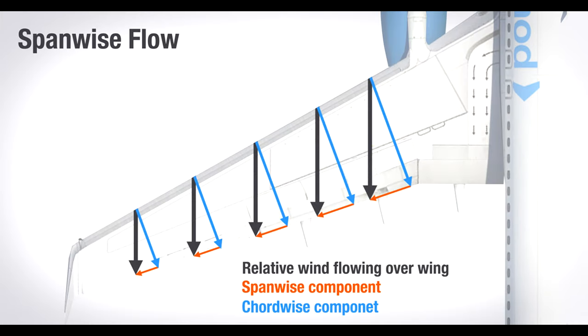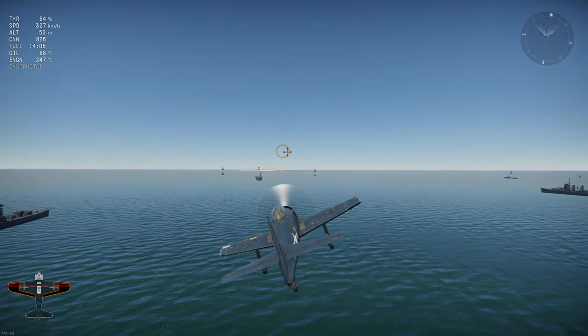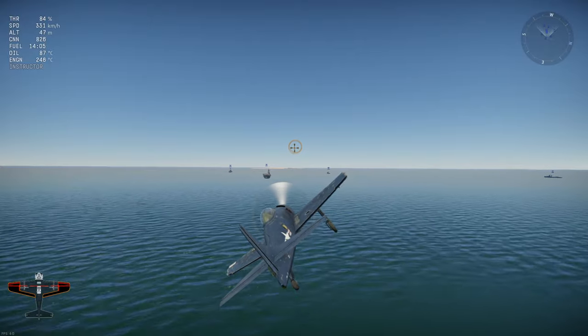Sweeping the wings decreases the maximum lift coefficient which worsens the takeoff and landing performance as well as the turn performance of the aircraft. As always there's a trade-off, and in this case it's between reducing wave drag or decreasing stall speed.